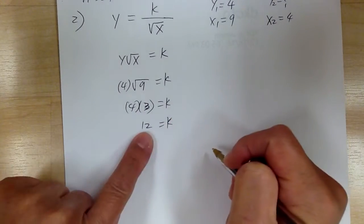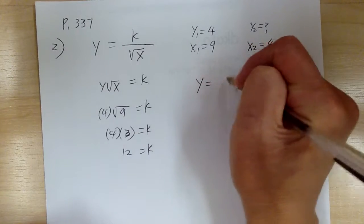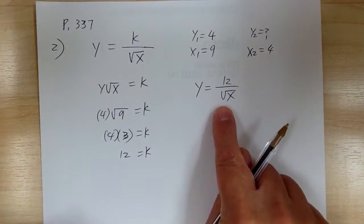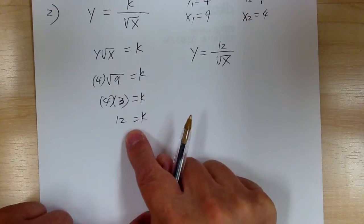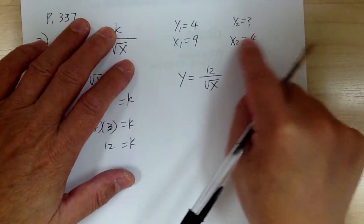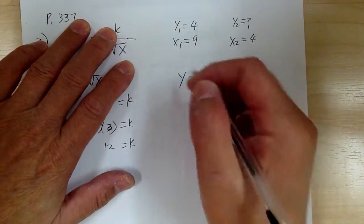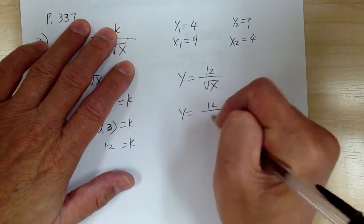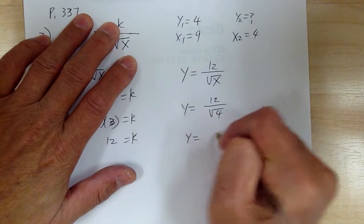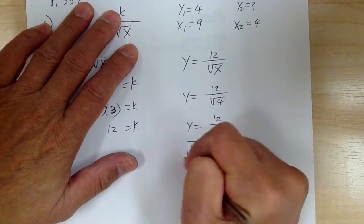Now, as soon as you find k, you need to update your equation. So you get y equal to 12 over square root of x. So that's your updated equation. As soon as you find k, update. Then you can use this equation to find whatever you're looking for. So you're looking for y when x equal to 4. So y equal to 12 over square root of 4. So y equal to 12 over 2. So y equal to 6. And that's it.